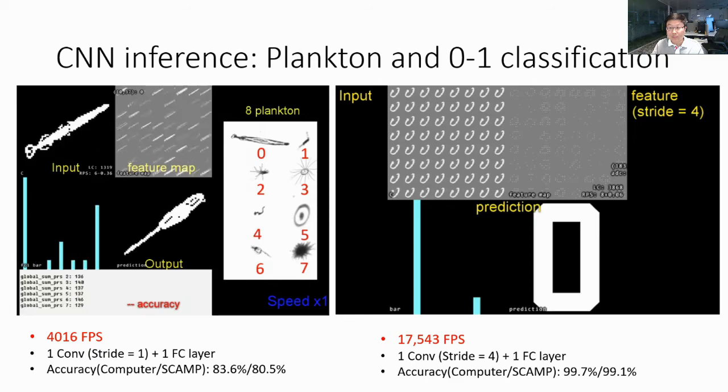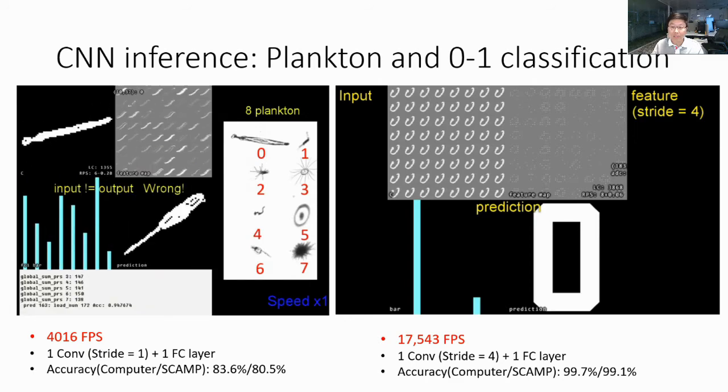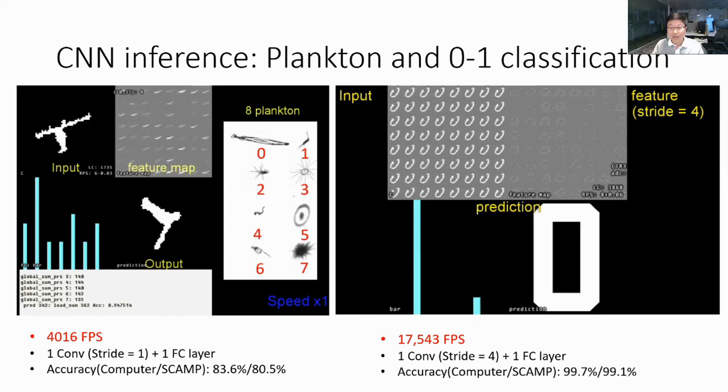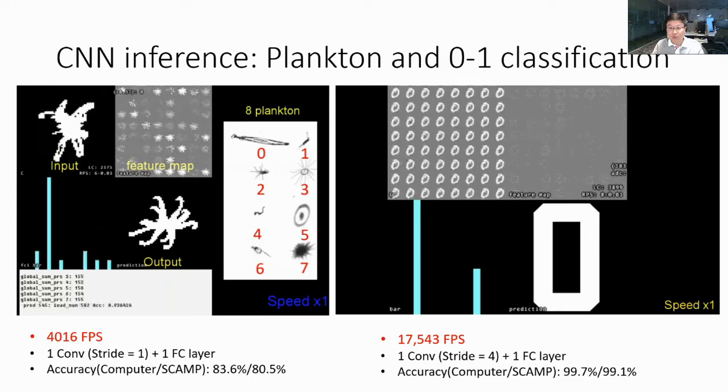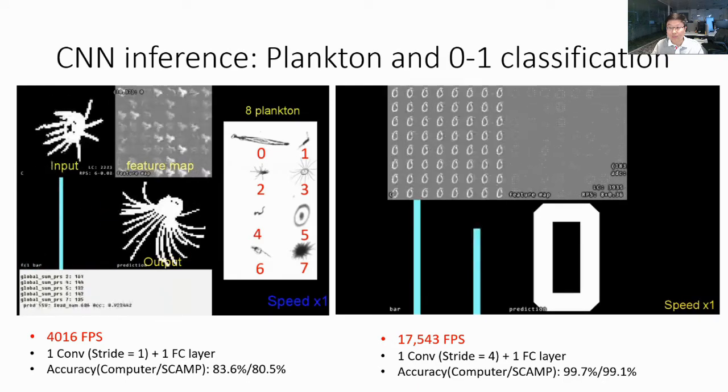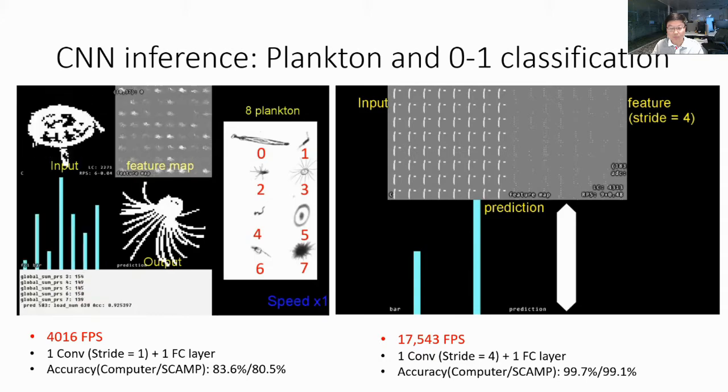We also extend the neural network to more applications such as eight types of plankton classification and high-speed 2 category digit recognition with different setups for neural network to show the versatility of the CNN on SCAMP.